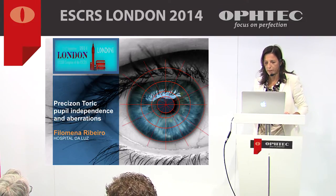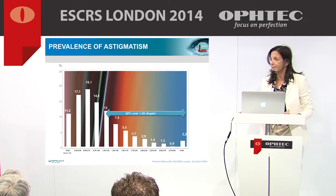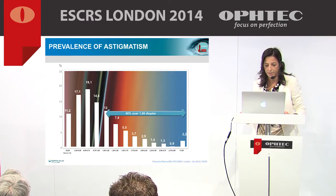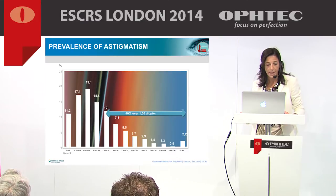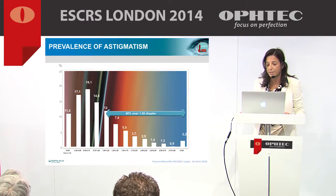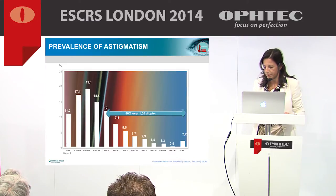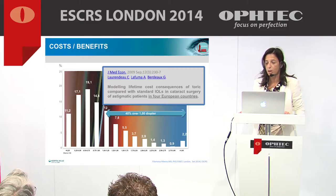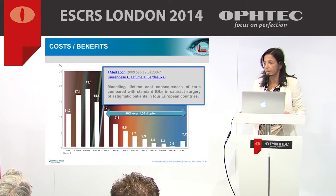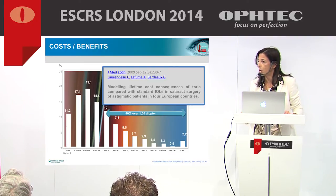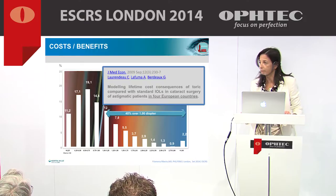First, let's talk a little bit about the toric market. As you know, corneal astigmatism is frequent in cataract patients and has a major impact on the effective outcomes of surgery. Correcting corneal astigmatism remains a challenge to achieve excellent visual quality. Several studies show us that toric IOLs reduce lifetime economic costs by reducing the need for glasses or contact lenses following cataract removal.